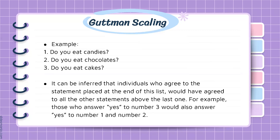For example, it can be inferred that individuals who agree to the statement placed at the end of the list would have agreed to all the other statements above the last one. For example, those who answered yes to statement number three would also answer yes to statement numbers one and two.